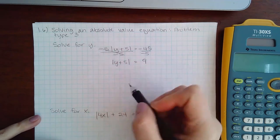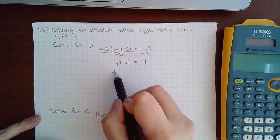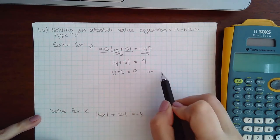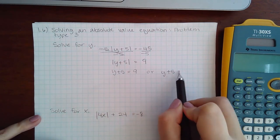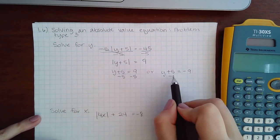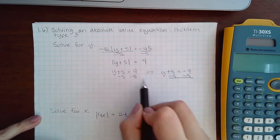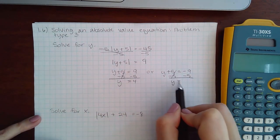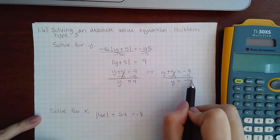And I get positive 9. Because it's positive, we have to take what is on the inside of the bars and equal it to 9, and then what is on the inside of the bars equal to negative 9. Then I continue solving this, so I get y equals positive 4 and y equals negative 14.